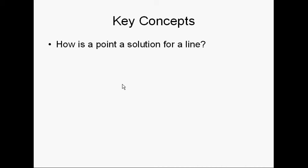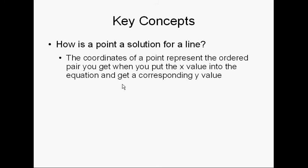Well, that line is really a graphical representation of all the possibilities of solutions. So when we talk about a point being a solution for a line, here's what we mean. We mean that the coordinates of a point represent the ordered pair that you would get when you put the X value into the equation and get a corresponding Y value.